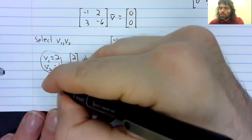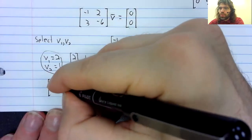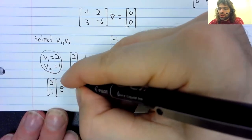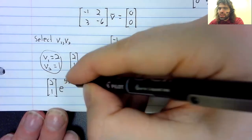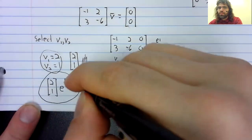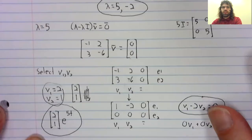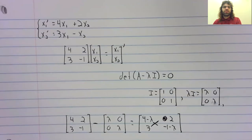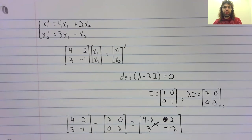This gives us two, one as an eigenvector. So two, one times e to the five t is a solution to this differential equation.